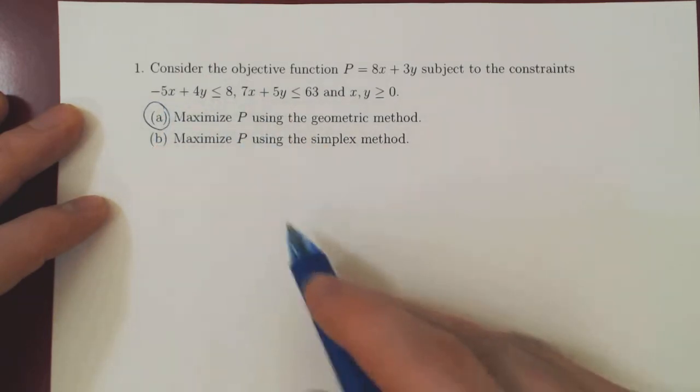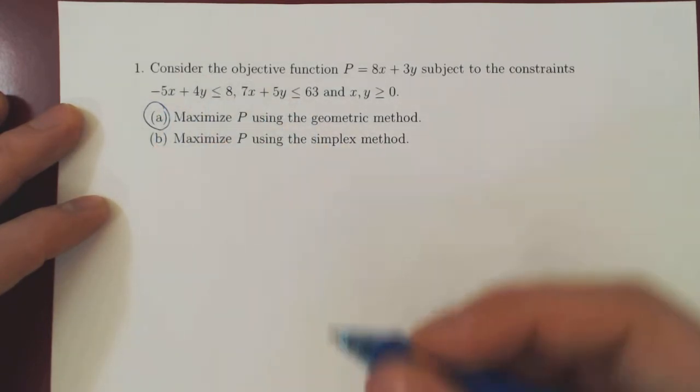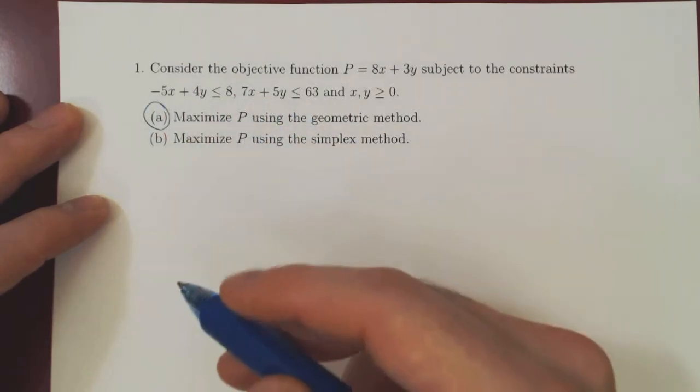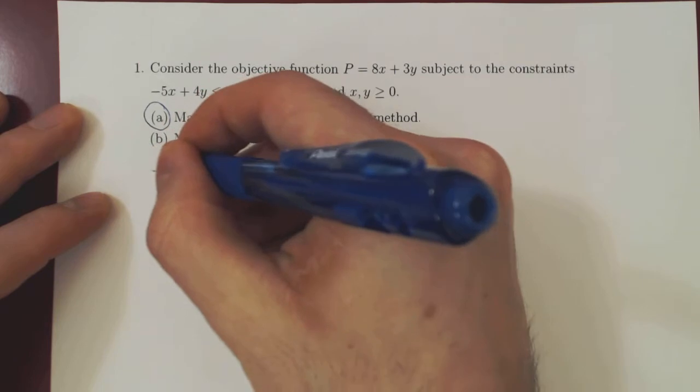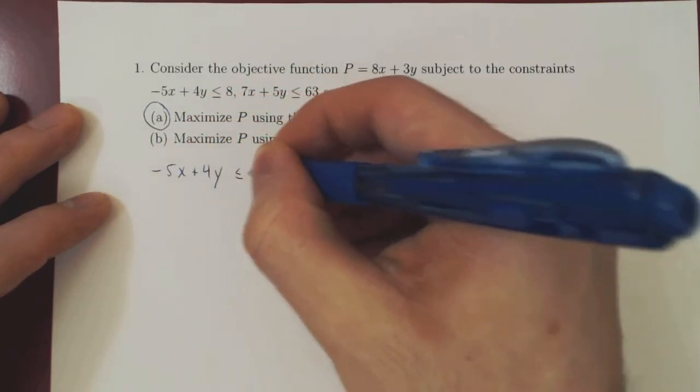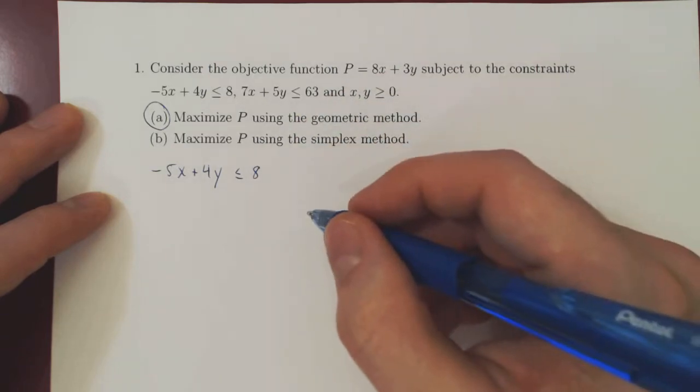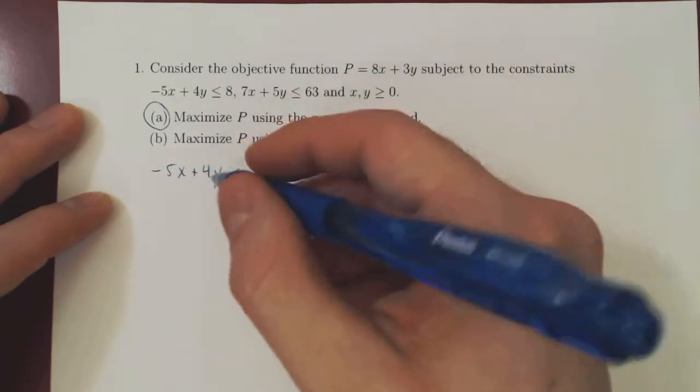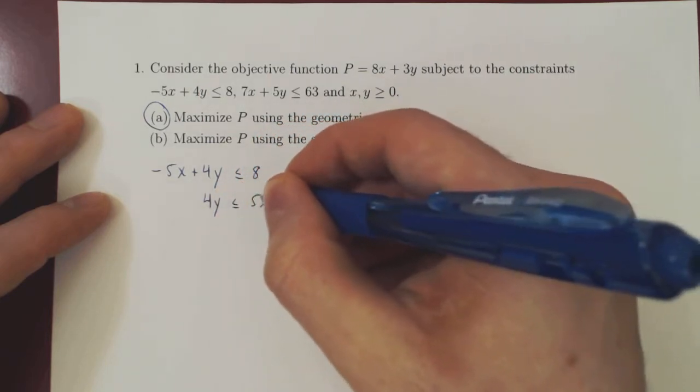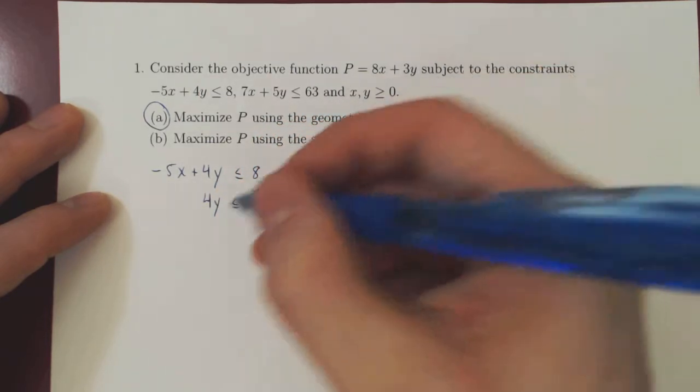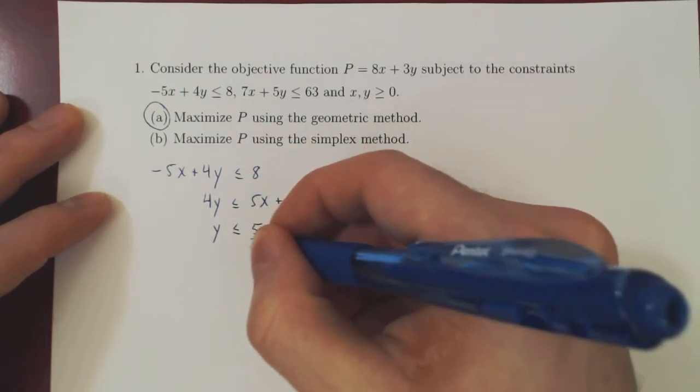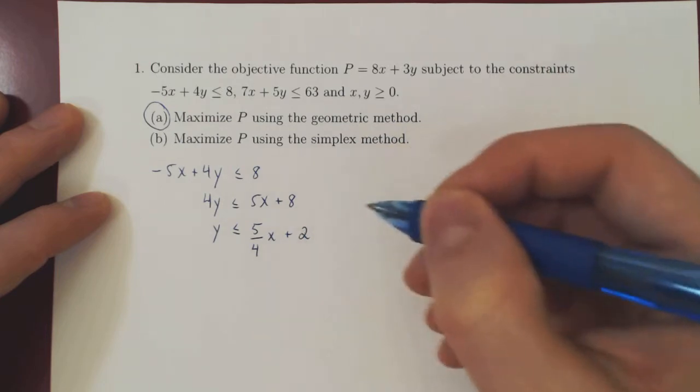Let's start with these two inequalities. So let's just rearrange these two to make them look more familiar. Take the first one. So negative 5x plus 4y is at most 8. Let's isolate y. So add 5x on both sides. So 4y is at most positive 5x plus 8, divide by 4, y is at most 5 quarters x plus 2.